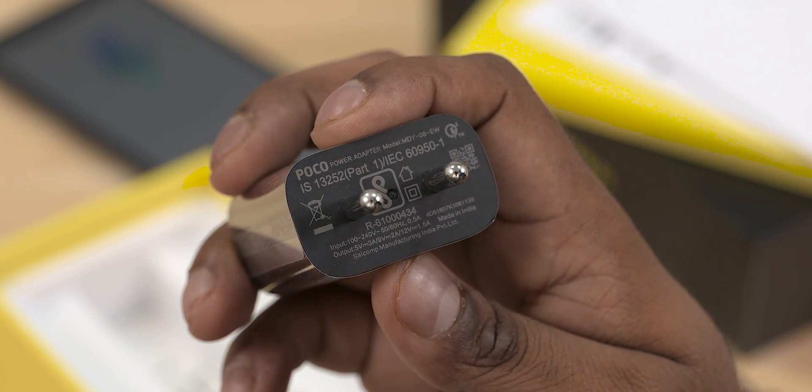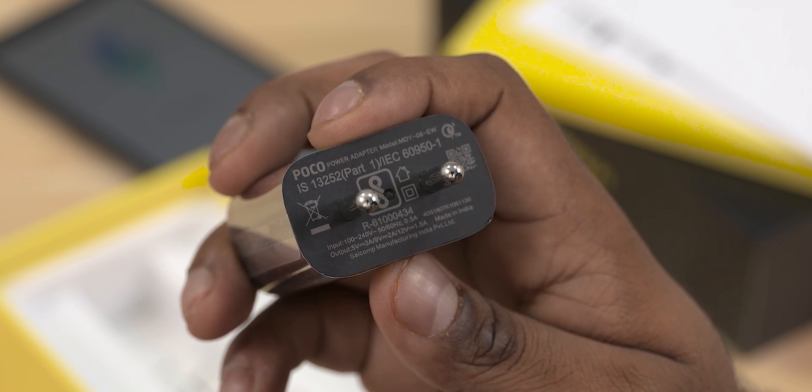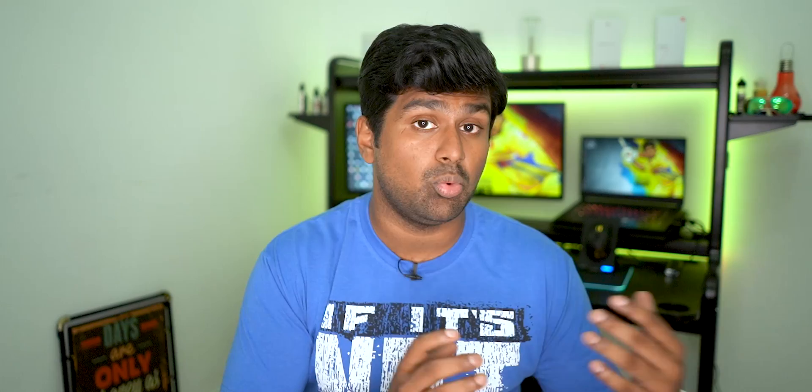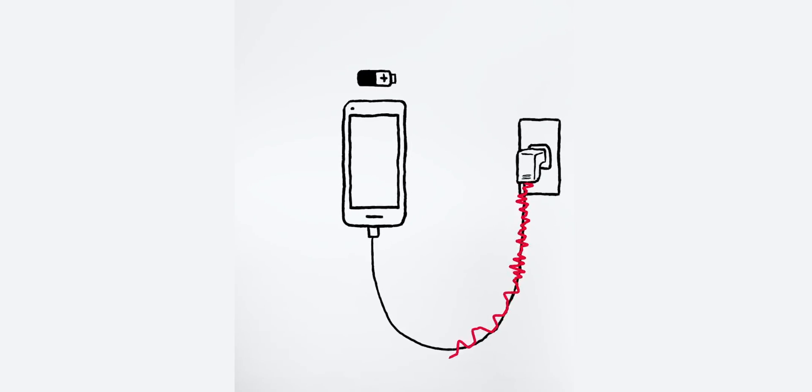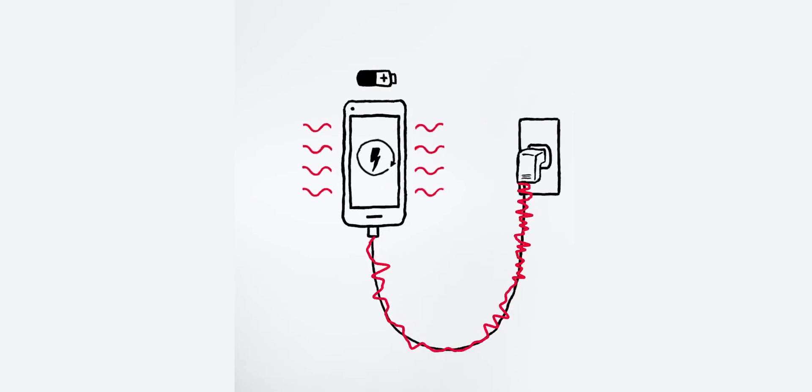OnePlus also shifts a bunch of circuitry from the phone to the wall adapter itself, and there's a reasoning behind it. In traditional fast charging methods, the phone heats up quite a bit. But by moving some of the circuitry from the phone over to the adapter, OnePlus manages to keep the heat away from the phone, which in turn allows you to charge the device more efficiently and effectively.